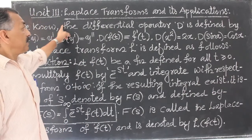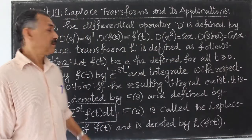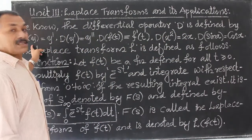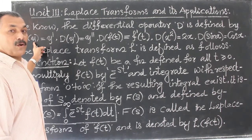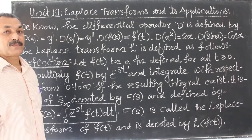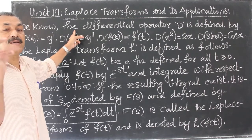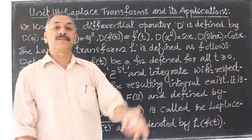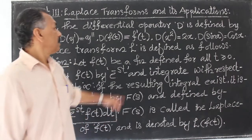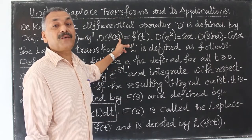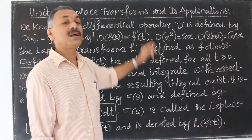The differential operator D is defined by: D of y of t is equal to y dash. Similarly, D of f of t — if f of t is a function of t — then D of f of t is equal to f dash of t.